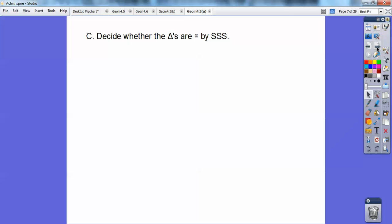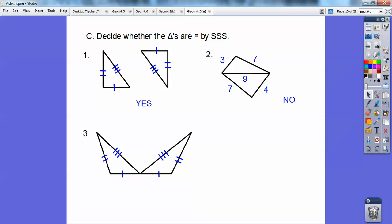So decide whether these triangles are congruent by side-side-side. Can you see that I have three sides on one triangle equal to three sides on another triangle? If that's the case, then yes, they're congruent. How about this? Are all three sides on the top triangle equal to all three sides on the bottom triangle? Nope, because that one's four and that one's three. They all have to be equal, so that's a no.